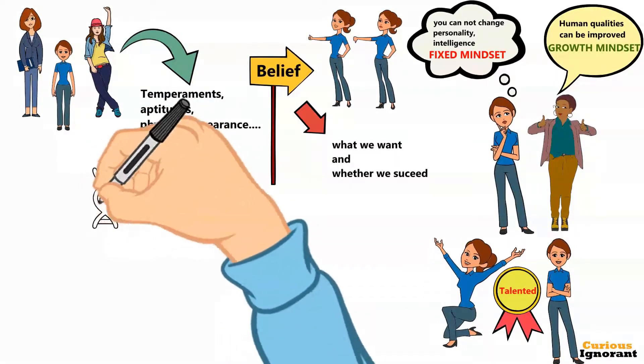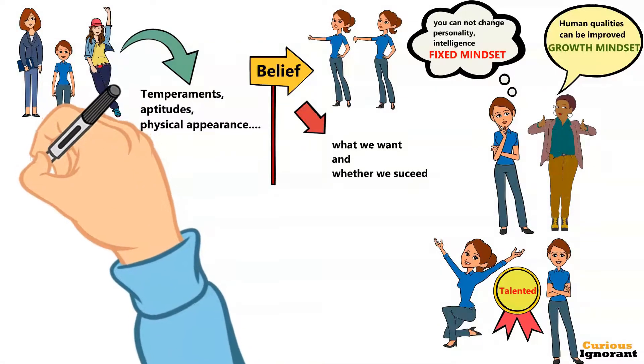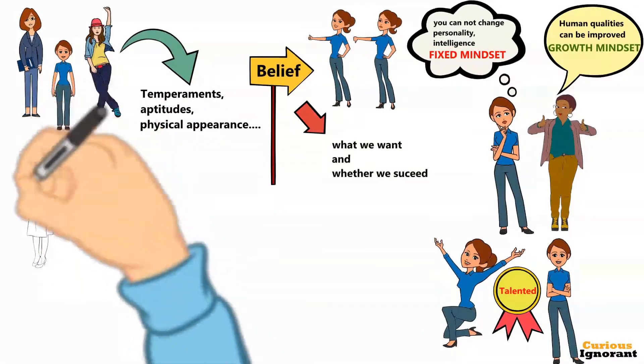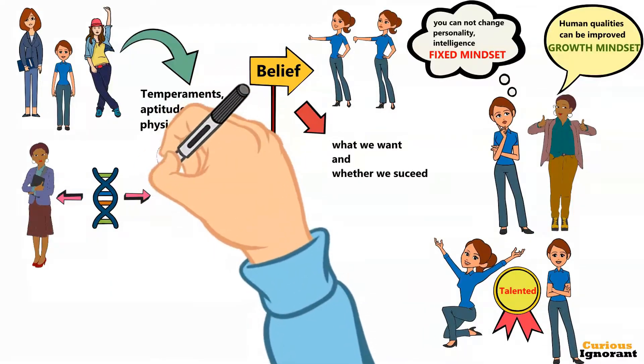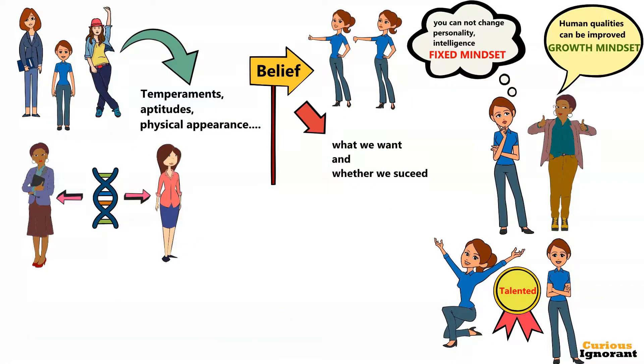Of course, each person has a unique genetic endowment. People may start with different temperaments and different aptitudes, but it's clear that experience, training, and personal effort take them the rest of the way.